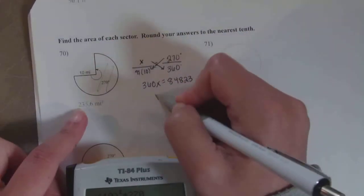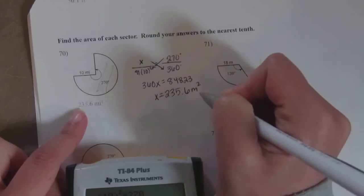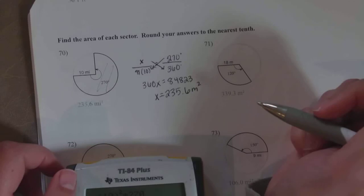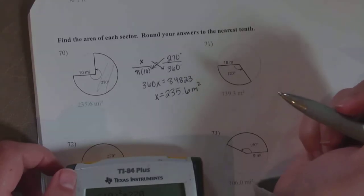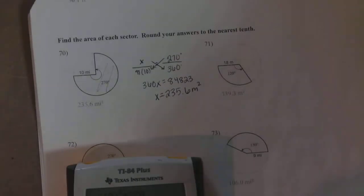So 235.6 miles - we are talking about the area of the sector, so squared. That's it, not too bad. Any questions, let me know. You are a rock star, and thank you for watching.